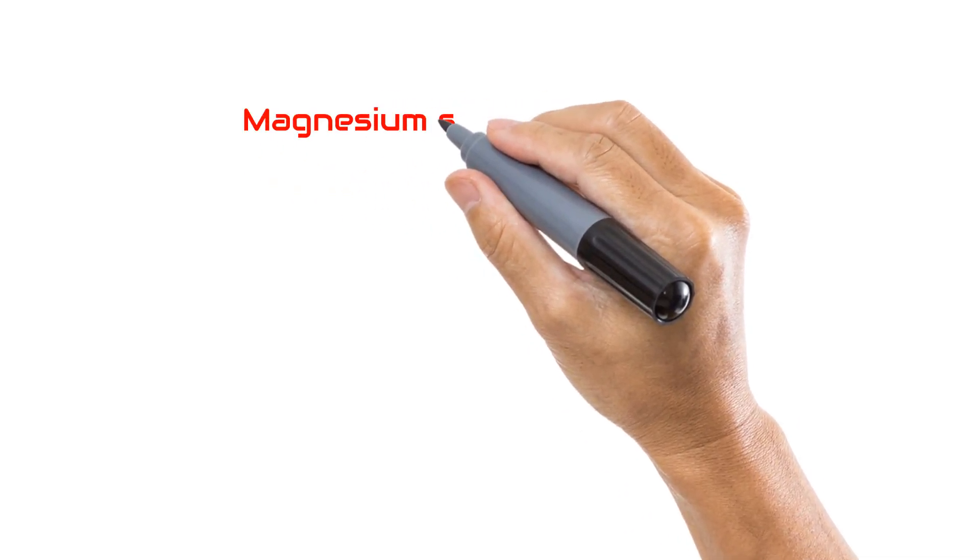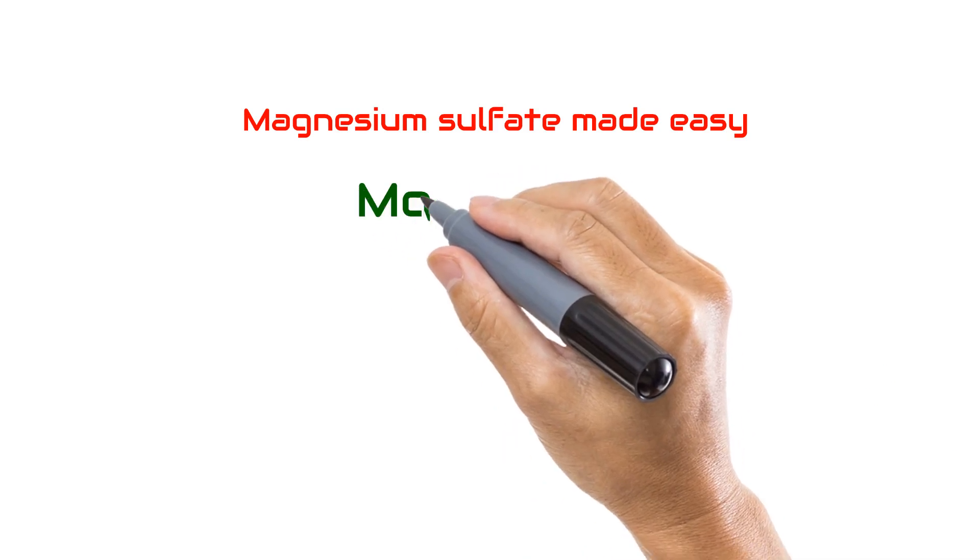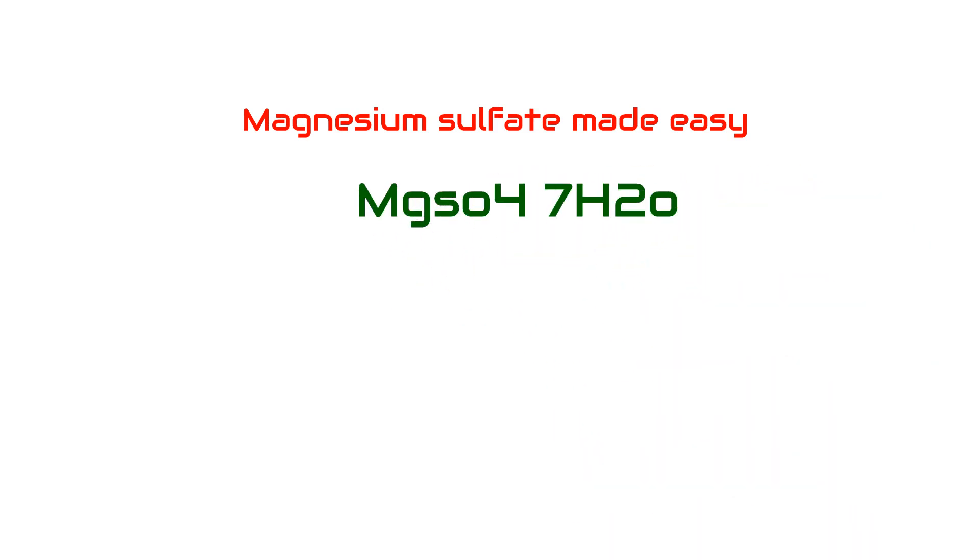Hello everybody, today we will talk about magnesium sulfate, chemical formula MgSO4·7H2O. The mnemonic is MgSO4·7H2O.